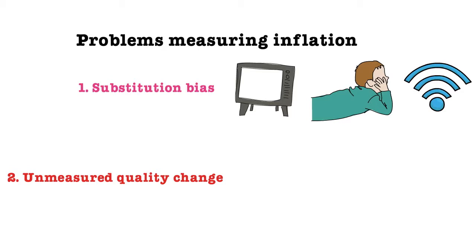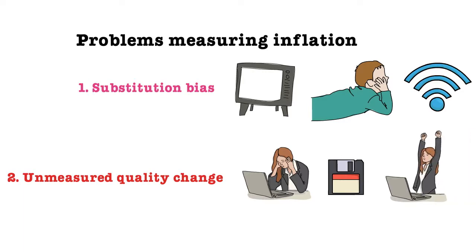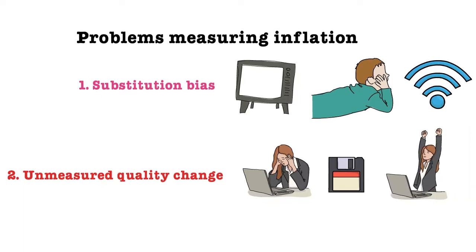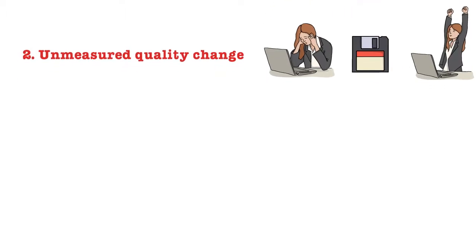Also there's unmeasured quality change sometimes in the CPI. For example, if you were using older technology and it was costing, let's say, $500 for a laptop, back in the old days the floppy disks were very inefficient. Laptops have moved along and they've improved substantially but their price hasn't increased. So sometimes the price isn't a correct measure of quality.